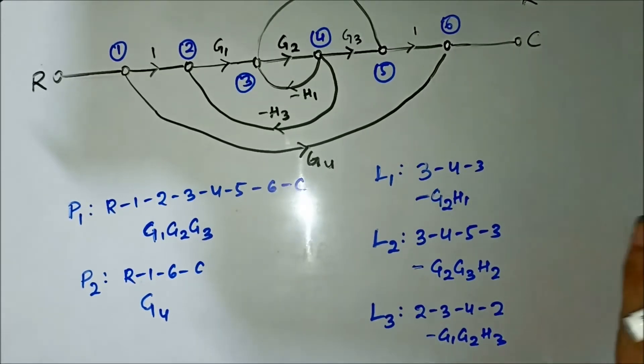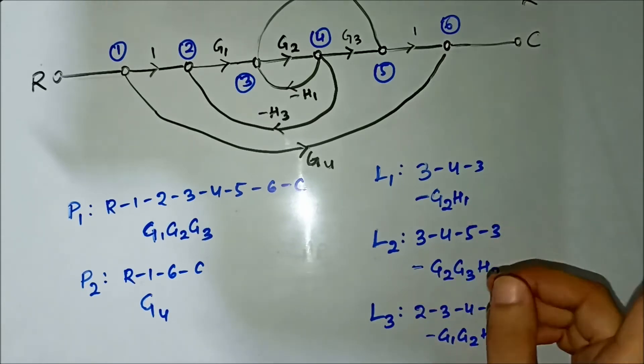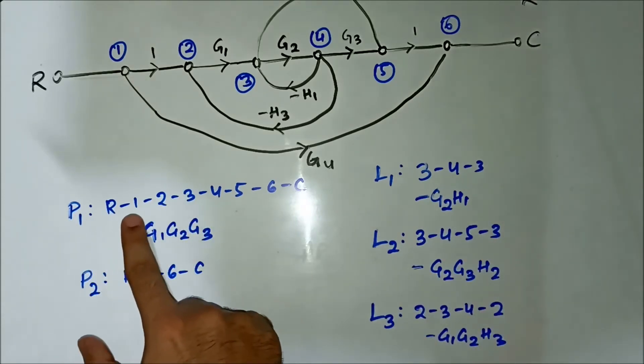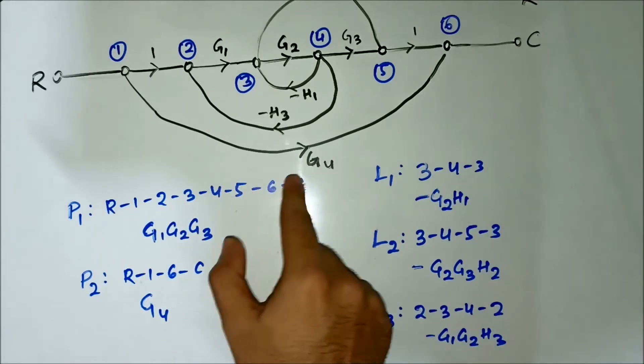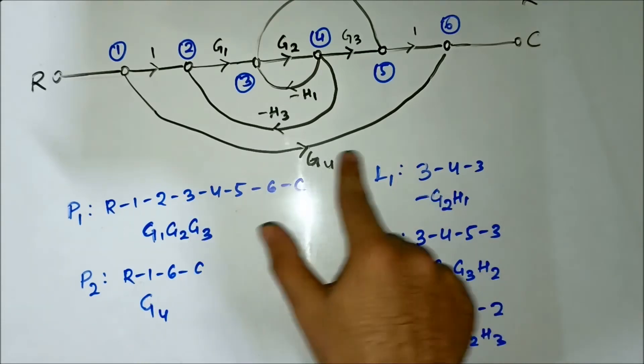So forward paths, loops, now the path factors. Path factors again depend on the forward paths whether they are touching or not touching any particular loops. The easy way to find out is to identify common nodes between the path and the loop. First forward path P1, you can see the nodal path is R-1-2-3-4-5-6-C.